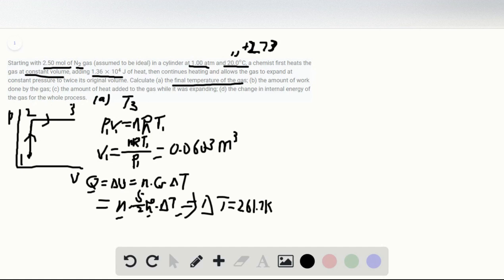So T2 is—because the initial temperature T1 is 20 degrees Celsius, and delta T is 261.7 Kelvin—the temperature T2 is 554.7 Kelvin. Is it right? Yeah, it's right.